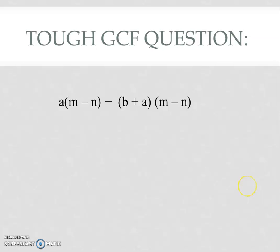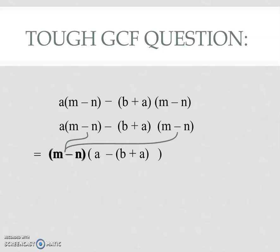And now we continue on the way we normally would. The (m minus n)'s are going to come out in the front. The leftovers are going to go into their own bracket. You remove the bracket inside the bracket. And in this case, a minus a is just equal to zero, so we get negative b on that second bracket.